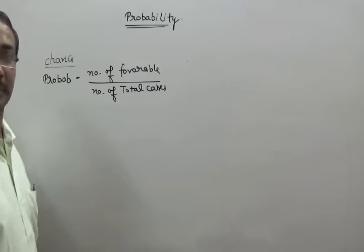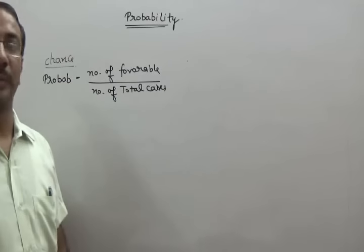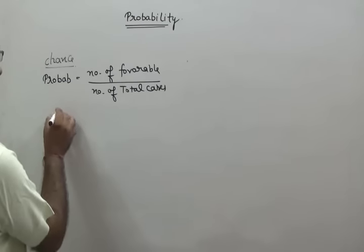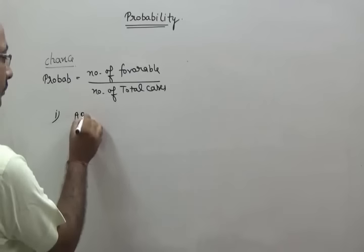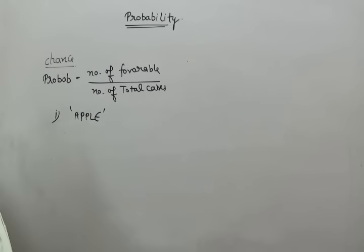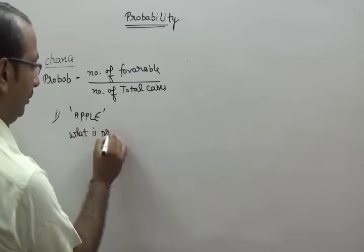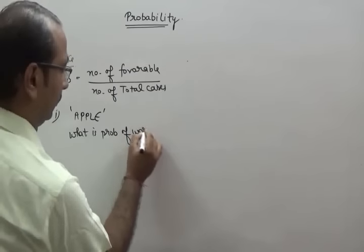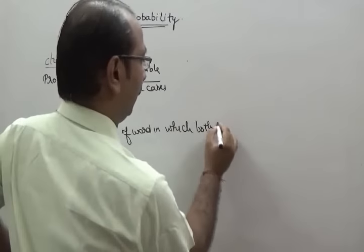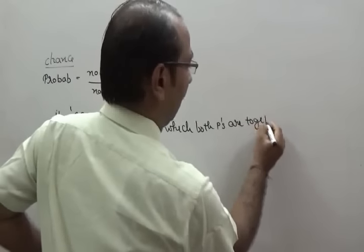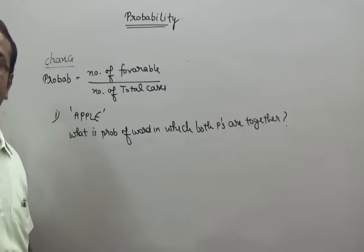I am going to take some examples in which we have to find the probability and also use the concept of permutation and combination. For the first example, one word is given — 'apple' — and words are formed by using the alphabets of it. The question is: what is the probability of a word in which both P's are together?